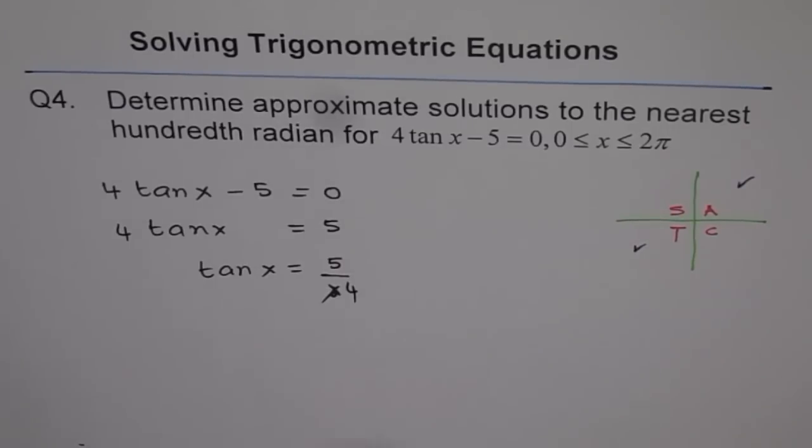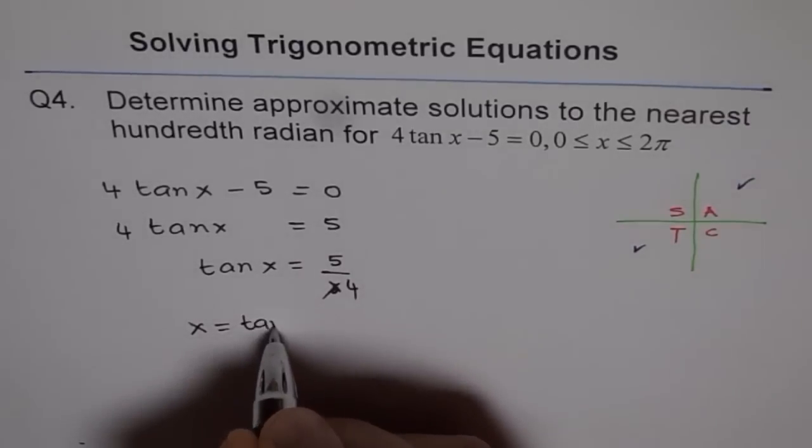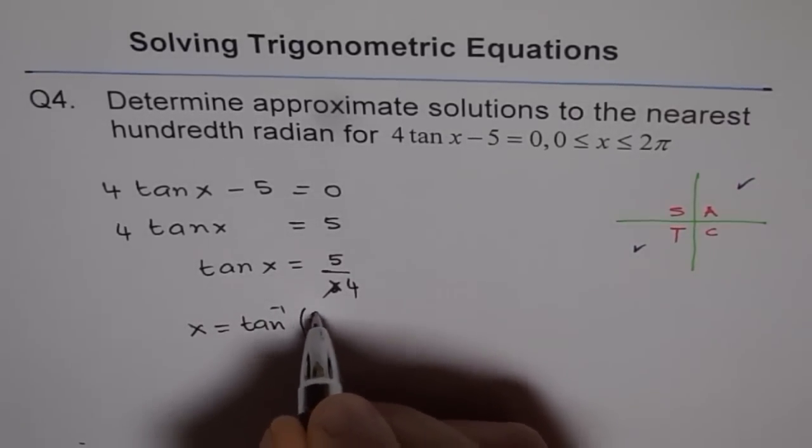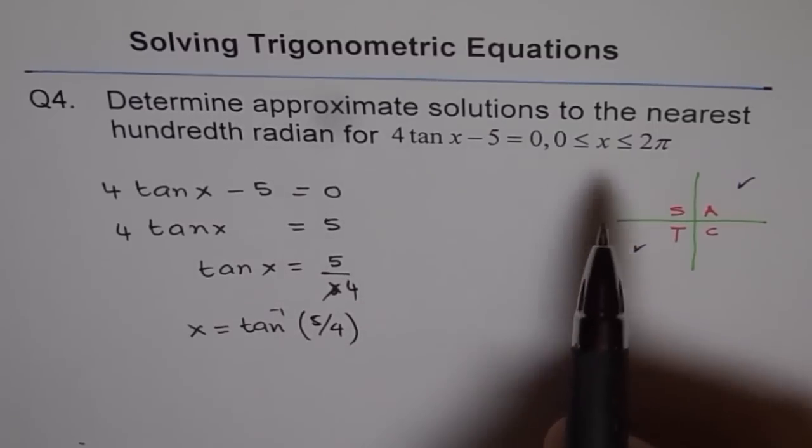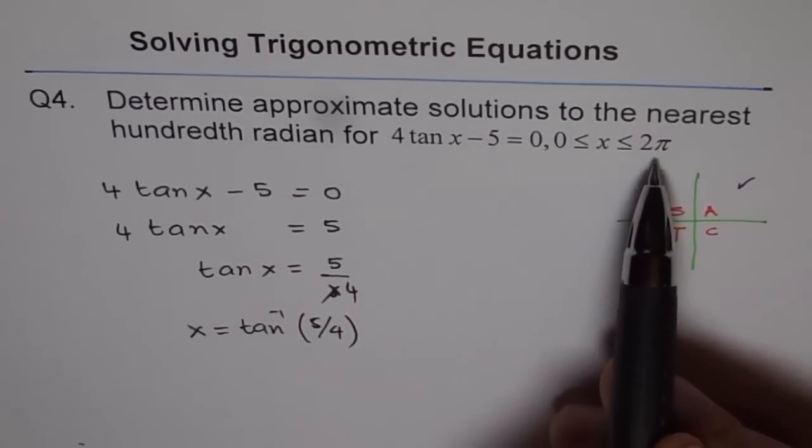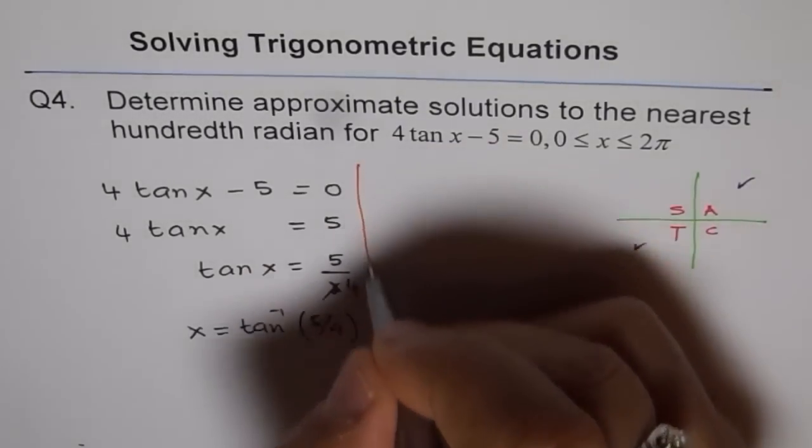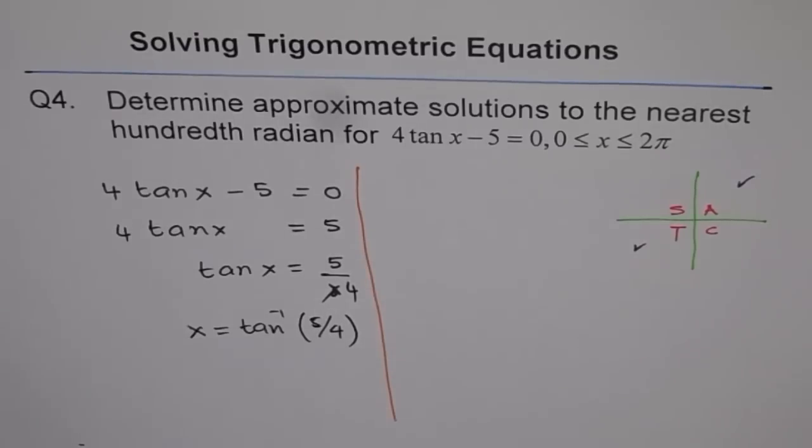Now we need to find what x is. So x is equal to tan inverse of 5 by 4. Since the domain is from 0 to 2π and it is in radians, we should find all our answers in radians. That's important. To do that we need our calculator.